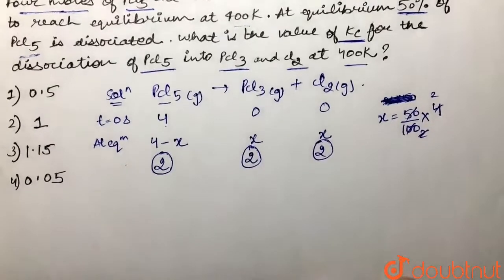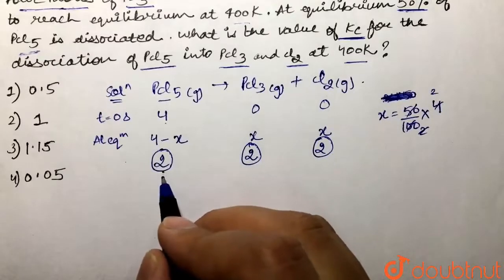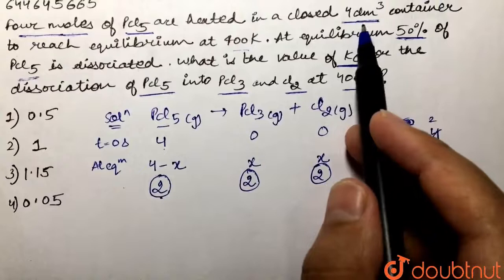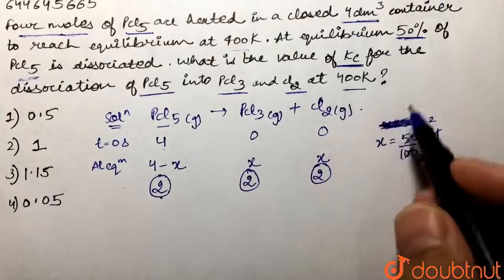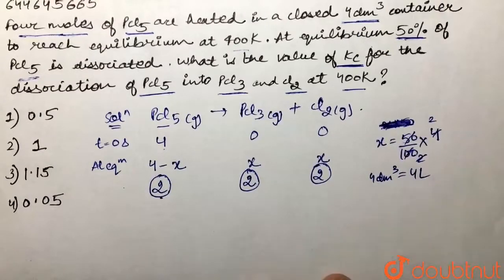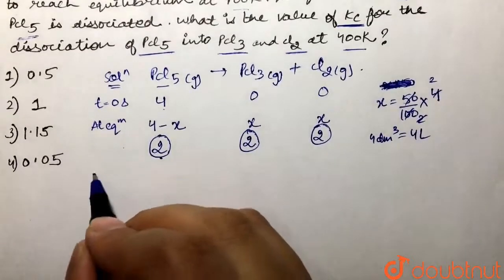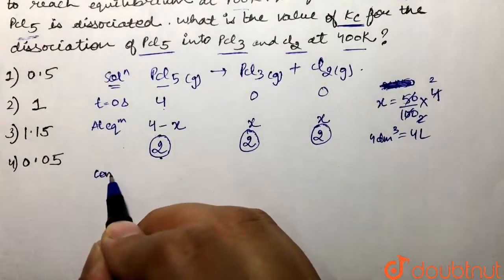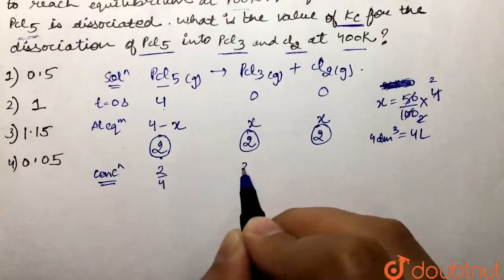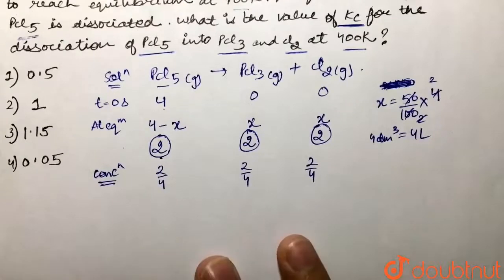Now, if we find out the concentration — concentration is moles per unit volume, and the volume is 4 decimeter cube, which equals 4 liters. So the equilibrium concentrations are: PCl5 = 2/4, PCl3 = 2/4, and chlorine = 2/4.